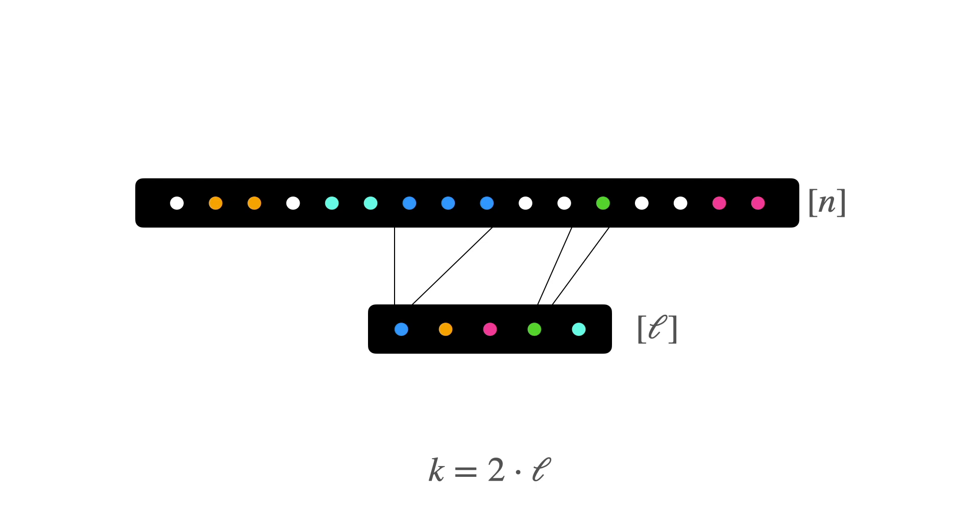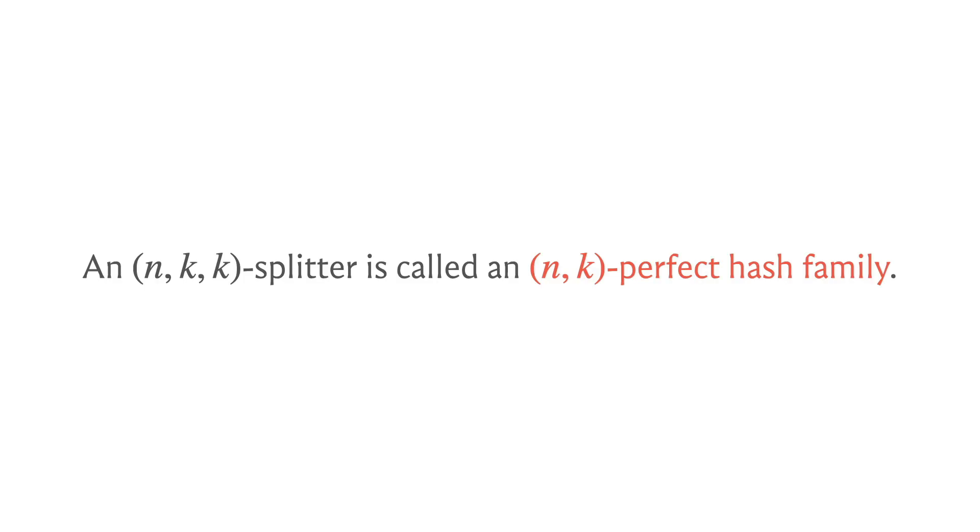So it turns out that you can construct the kind of collections that we were looking for, which by the way are called (n,k)-perfect hash families—that's what you need to derandomize the color coding algorithm. They are really just (n,k,k)-splitters if you think about it. And it turns out that one way to construct an (n,k,k)-splitter is to compose an (n,k,k²)-splitter with a (k²,k,k)-splitter. So notice that an (n,k,k²)-splitter is a collection of functions that map 1 to n to 1 to k², and a (k²,k,k)-splitter is a collection of functions that maps the domain 1 to k² to 1 to k.